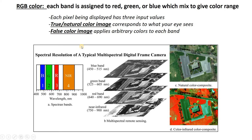To stick with this example: if we take the blue, green, and red bands and assign them display colors that match blue, green, and red, we end up with a natural color or true color image where black pavement looks black and green grass looks green. But if we assign different colors — for example, take the infrared band and assign it the color red while leaving the red band out altogether — then we get an image where the grass looks red.